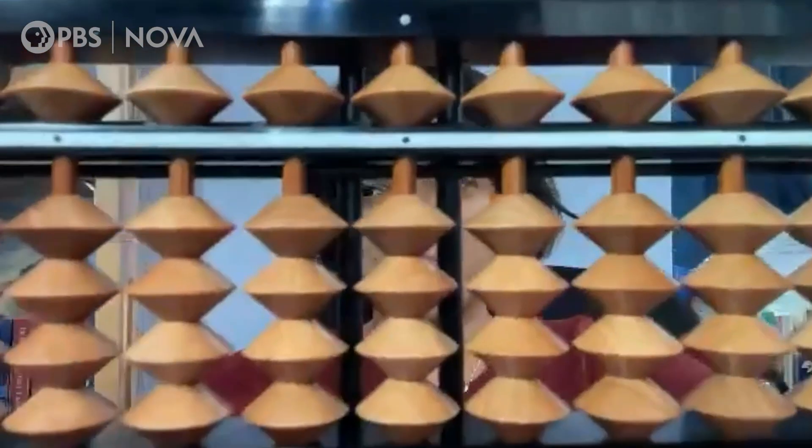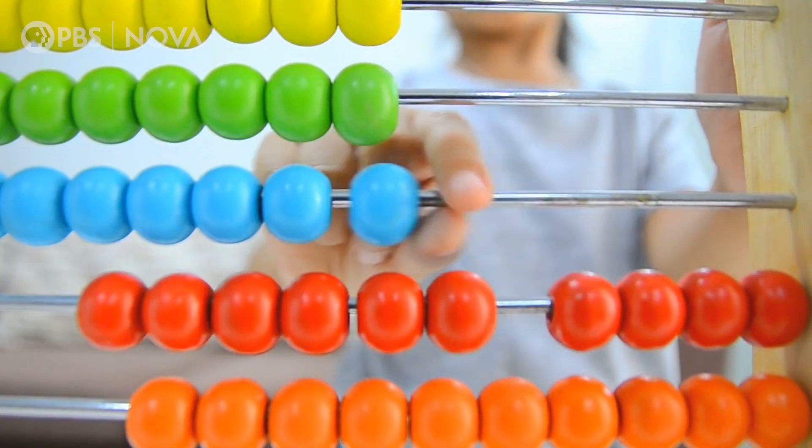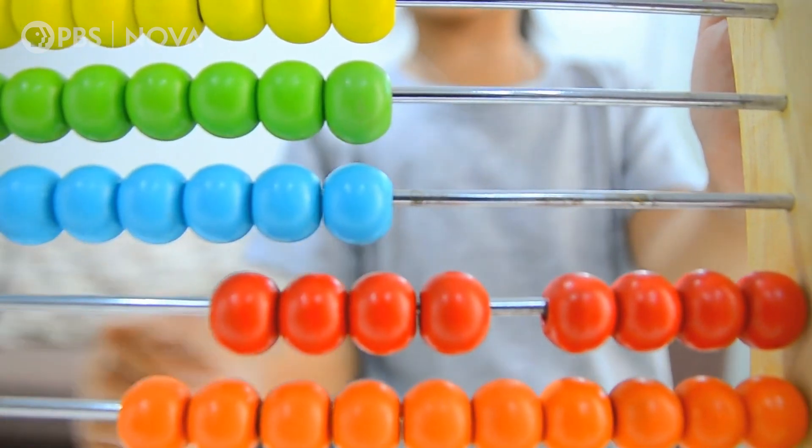On this abacus, each column represents a different place value. And these beads are moved when counting or to perform mathematical operations.